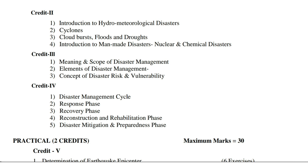In Credit 3 you have to study: first, meaning and scope of disaster management; second, elements of disaster management; third, concept of disaster risk and vulnerability. In Credit 4 you have to study: first, disaster management cycle; second, response phase; third, recovery phase; fourth, reconstruction and rehabilitation phase; fifth, disaster mitigation and preparedness phase.